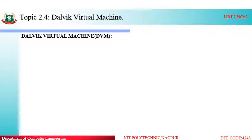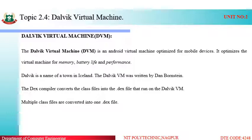Coming to the topic of Dalvik Virtual Machine — as we all know, when we use Java, we use the Java Virtual Machine. The Java compiler converts the Java code into machine code, which is understandable by the processor. This machine code is then converted into byte code by the Java Virtual Machine. We convert it into byte code because it is understandable by any platform, which is why Java is a platform-independent language and Java programs can run on any platform.